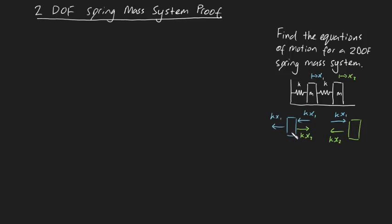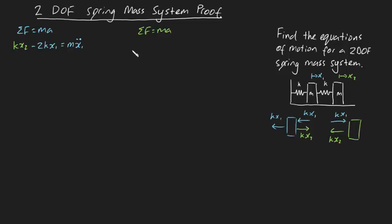Now that we've got the free body diagrams sorted, let's use F = ma to generate some equations. For the first block, the sum of forces equals ma. We've got kx2 and then minus 2kx1, which equals m times the acceleration x1 double dot. Now applying F = ma to the second block, we get kx1 minus kx2 equals m times x2 double dot.